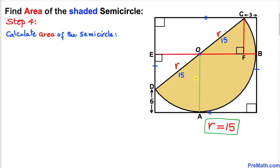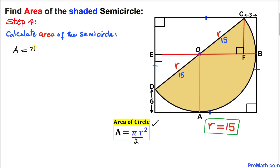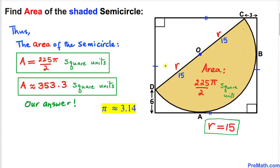Here's our final step: we figured out that radius r is 15, so we are going to calculate the area of this shaded semicircle. The area of a circle formula is pi r squared, and since we are dealing with a semicircle this becomes pi r squared divided by 2. Filling in: area equals pi times 15 squared divided by 2, which gives us 225 pi over 2 square units, or approximately 353.3 square units if we use pi approximately equal to 3.14.